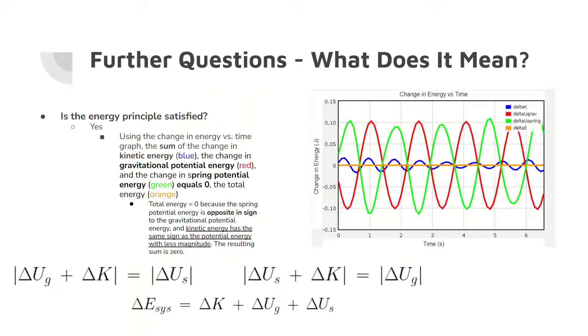The energy principle is satisfied. Looking at the change in energy versus time graph, the sum of the change in kinetic energy, the change in gravitational potential energy, and the change in spring potential energy equals zero. This sum is the change in the total energy of the system, which is denoted by the orange line. This sum shows that nothing in the surroundings does work on the system, which is true based on the definition of the system in this experiment.